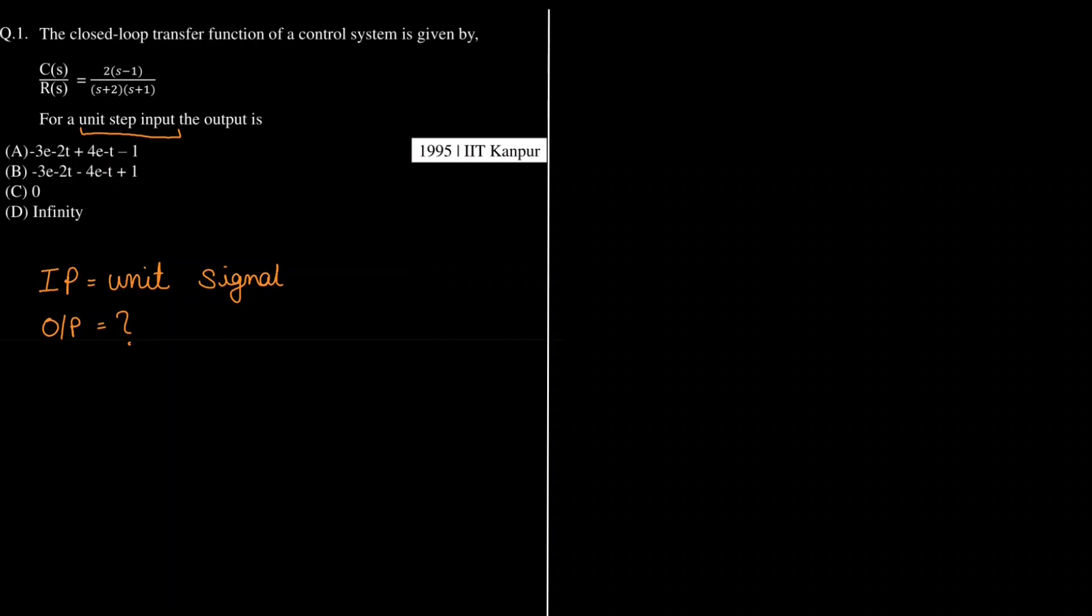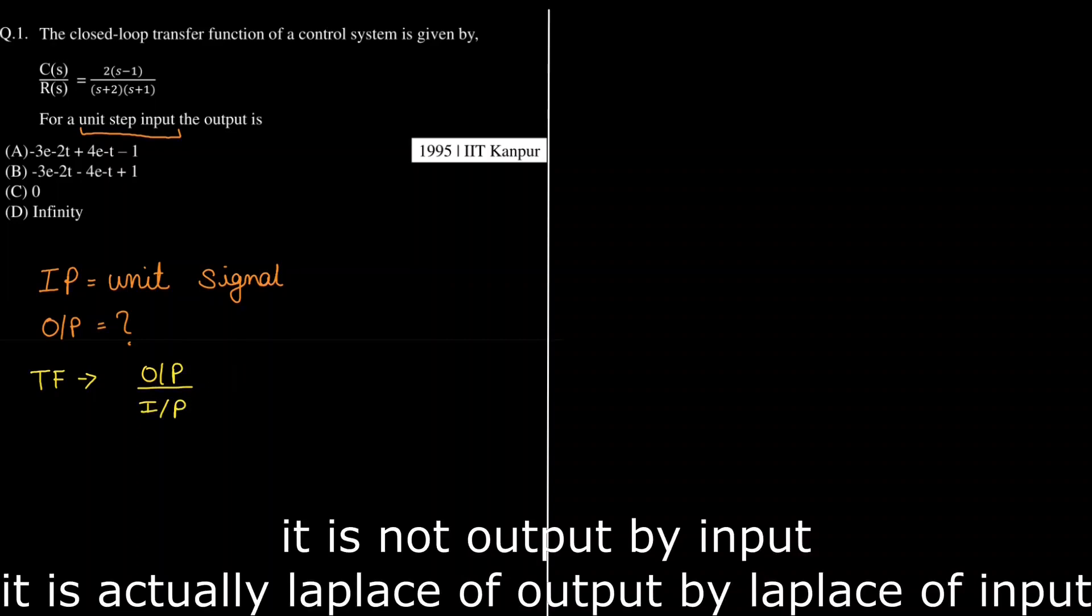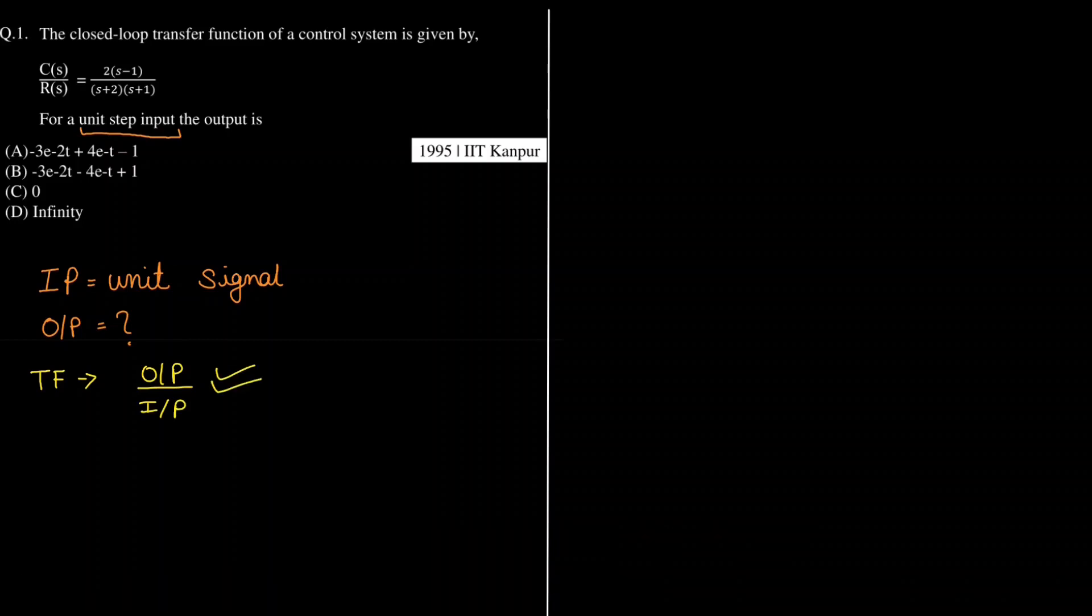Now we know that a transfer function is basically a ratio of output divided by input. So even in this question they have clearly given that C(s) by R(s) is the transfer function.